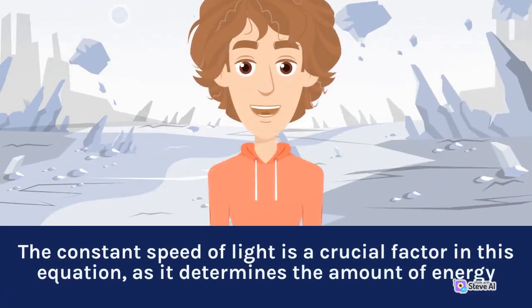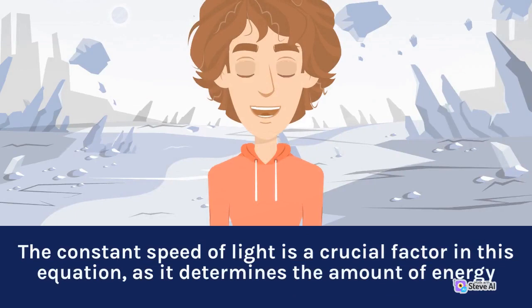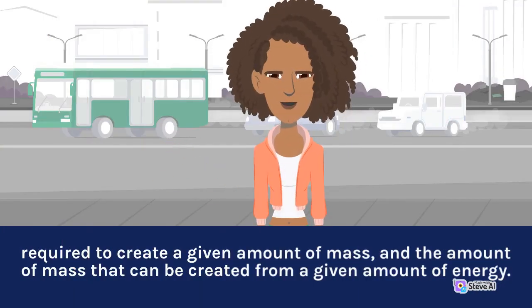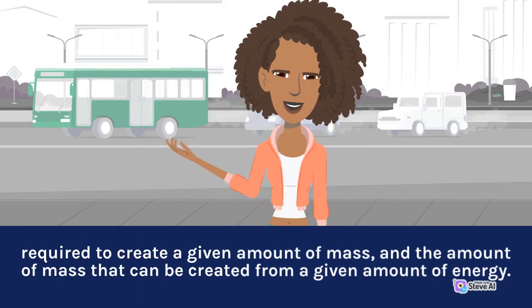The constant speed of light is a crucial factor in this equation, as it determines the amount of energy required to create a given amount of mass, and the amount of mass that can be created from a given amount of energy.